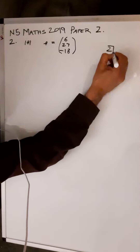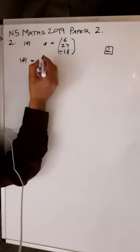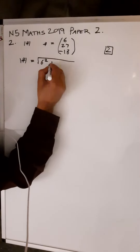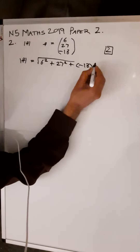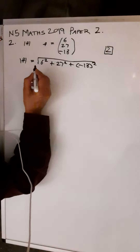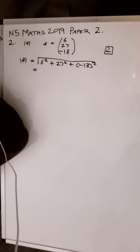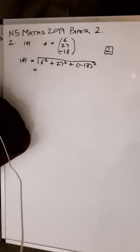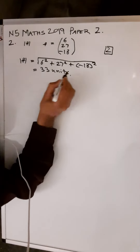This is for two marks. The magnitude of P is equal to the square root of 6 squared plus 27 squared plus (-18) squared. That goes into your calculator: square root of 36 plus 27 squared plus 18 squared, which gives you 33 units. That's two marks.